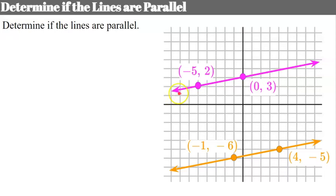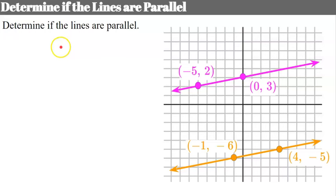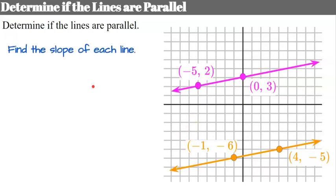Now let's look at this graph. We have two lines already on our graph with two points given on each line, and we're asked to determine if the lines are parallel. You don't want to just look at them and say they look parallel — you want to find the slope of each line to verify and prove that they are parallel.